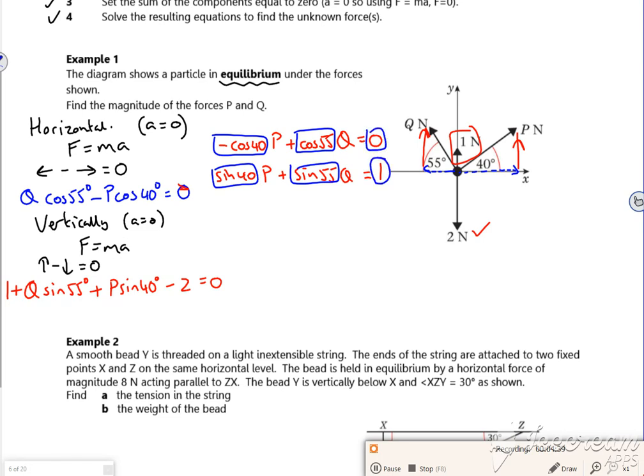So I can put the sine 40 and the sine 55 in and zero in the one. And I've put that into poly, it gets me out as P as 0.58 newtons and Q as 0.77 newtons there.